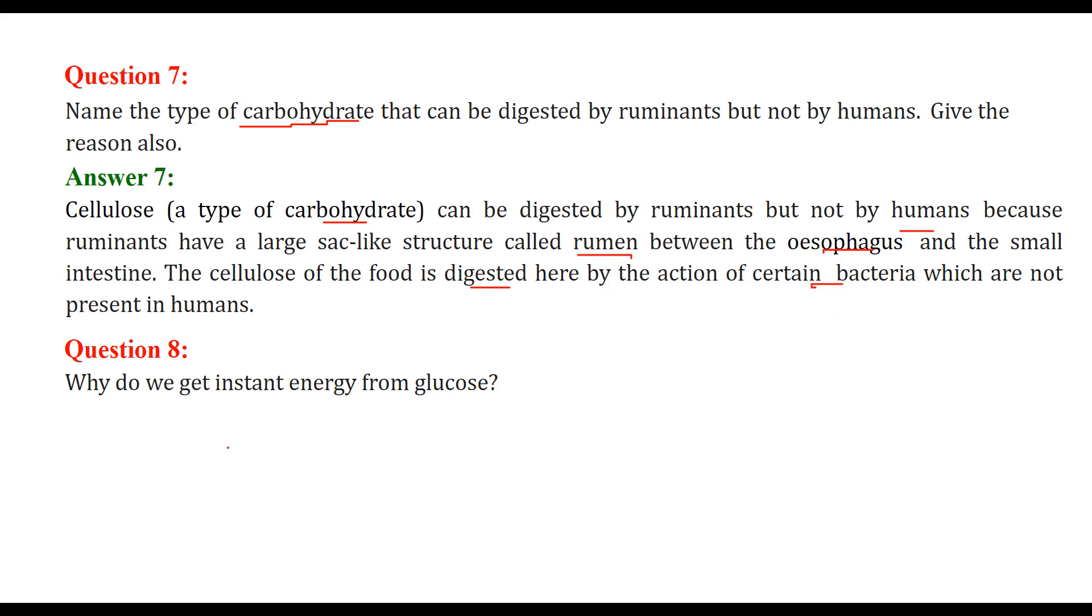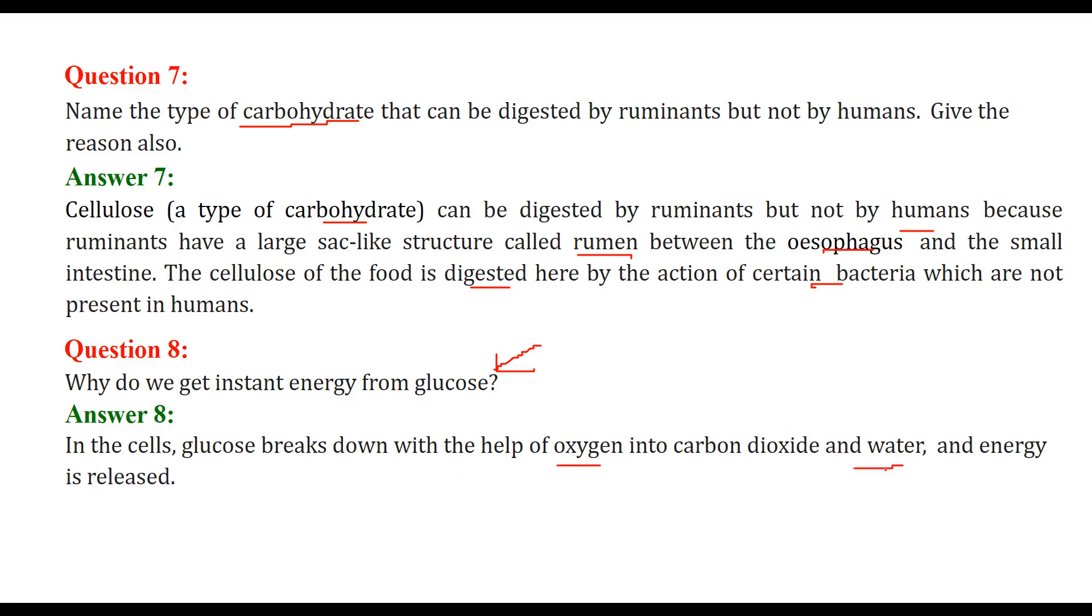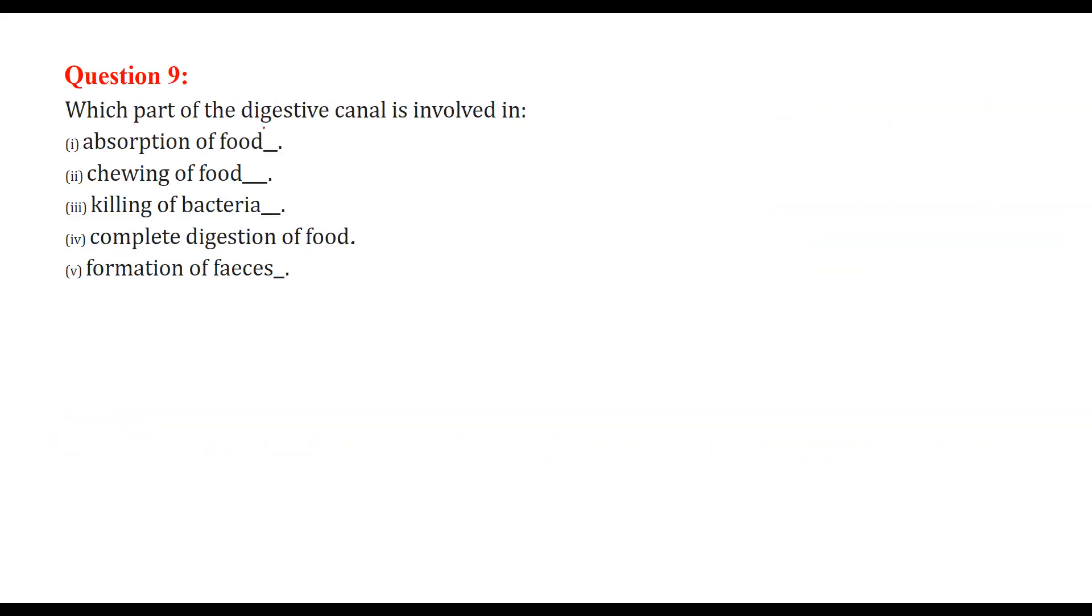Why do we get instant energy from glucose? You might have seen players, they are taking glucose in between. Why? They want instant energy. In the cells, the glucose breaks down with the help of oxygen into CO2 and water and it releases energy. So instant energy releases there.